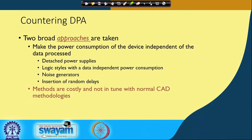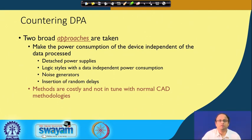For example, you can actually try to have a detached power supply. You can try to use logic styles with data-independent power consumption. For example, you can try to bring in complementary logic, where if you are operating on x in one circuit, you are operating on x-bar in another circuit. The idea is that if there is some net making a 0-to-1 toggle, there is another net making a 1-to-0 toggle. Likewise, you can also try to bring in techniques like noise generators, inserting random delays — but the point is most of these techniques are not essentially in tune with normal CAD methodologies and also the methods are often costly.